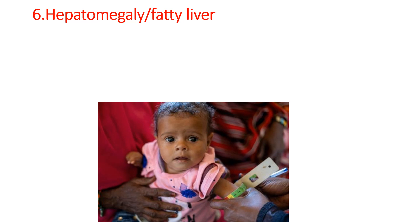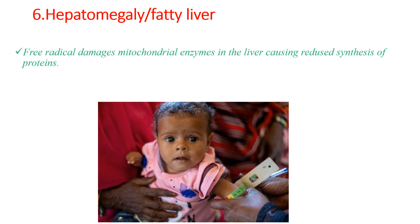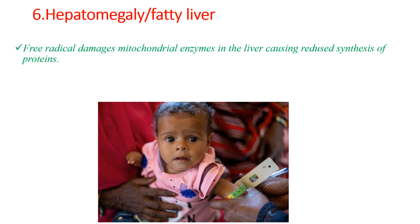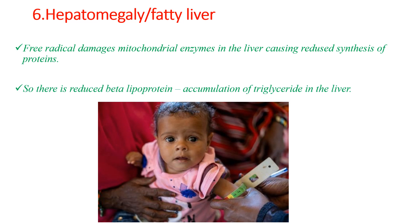Hepatomegaly or fatty liver of malnutrition occurs because free radical damage to mitochondrial enzymes in the liver causes reduced synthesis of proteins, particularly reduced beta-lipoprotein. This causes accumulation of triglycerides in the liver, so hepatomegaly is due to accumulation of triglycerides.